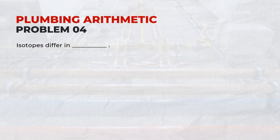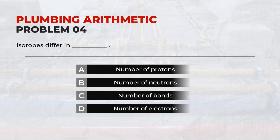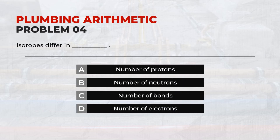Isotopes differ in: Answer: B. Number of neutrons.